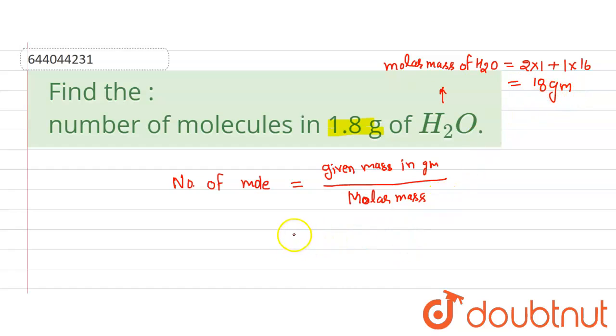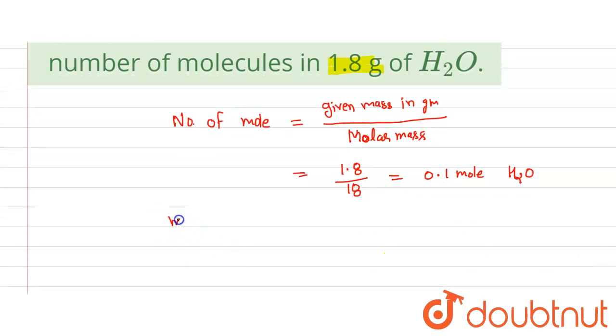The given mass is 1.8 grams and the molar mass equals 18 grams, so it equals 0.1 mole of H2O. According to Avogadro, 1 mole of a substance...